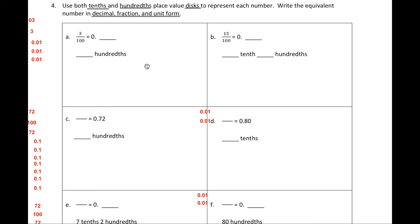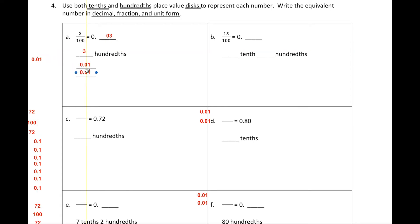Let's go ahead and solve A. We have three over one hundred, which is equal to 0.03. How many hundredths is that? It is three hundredths. Now let's draw the disc. I have how many hundredths discs? Three — here's one hundredths disc, my second hundredths disc, and my third hundredths disc.